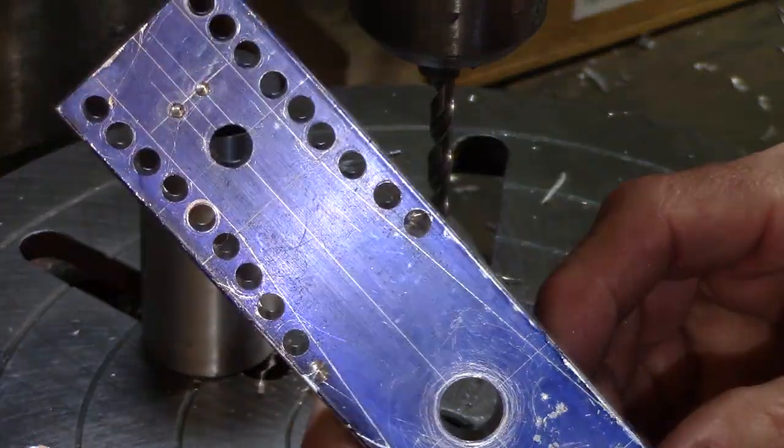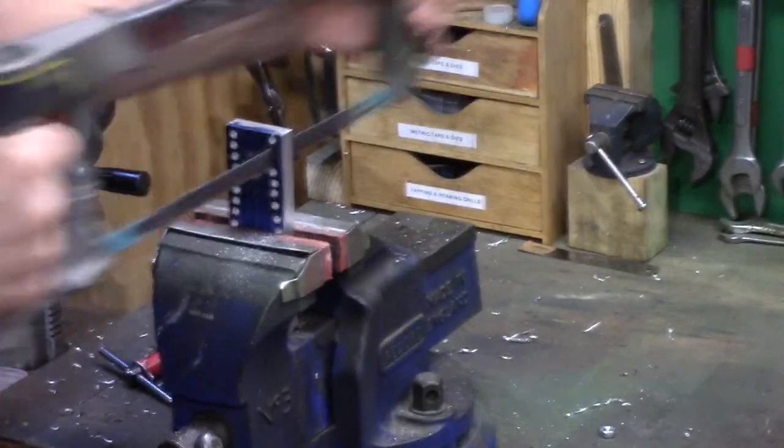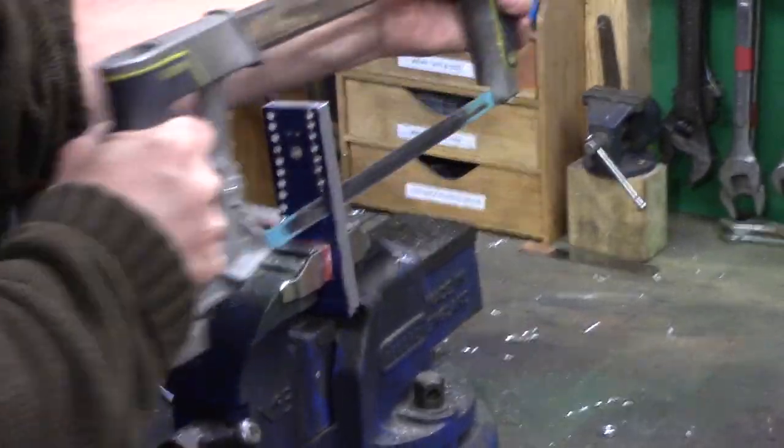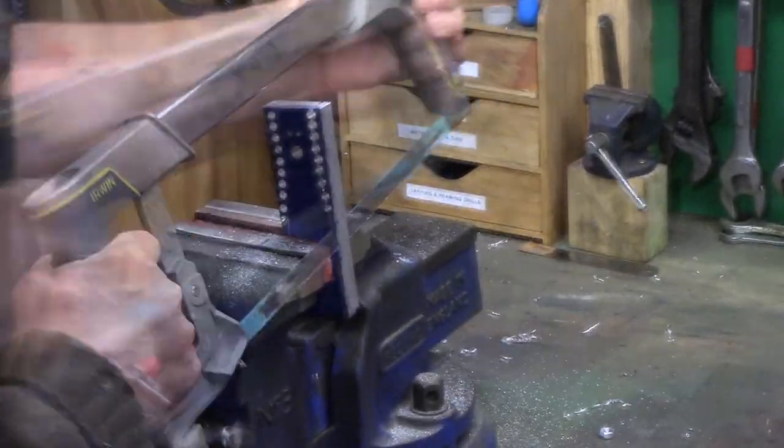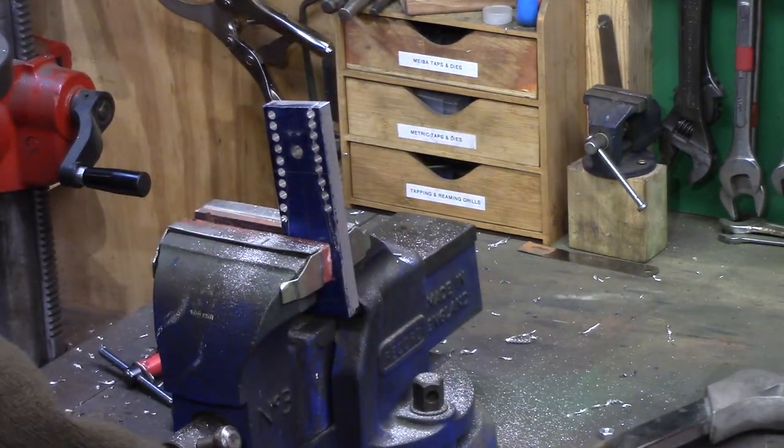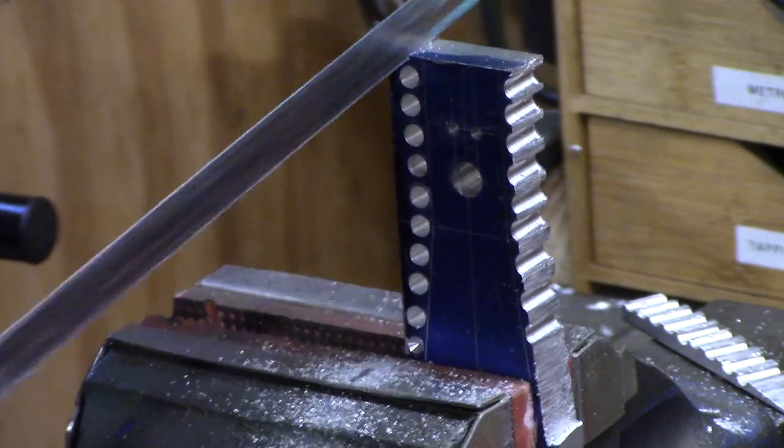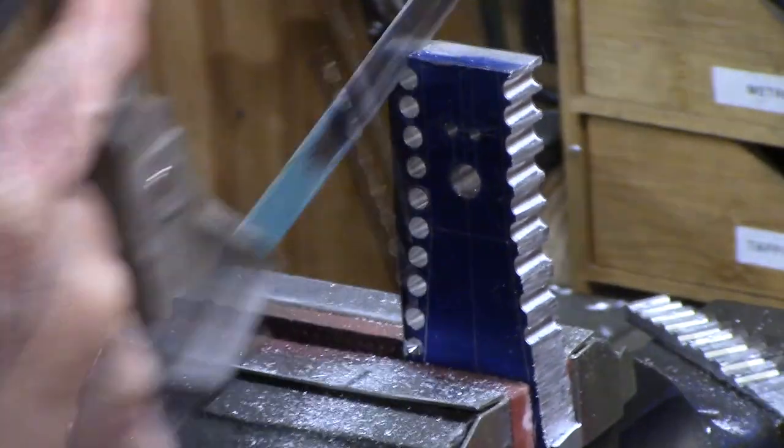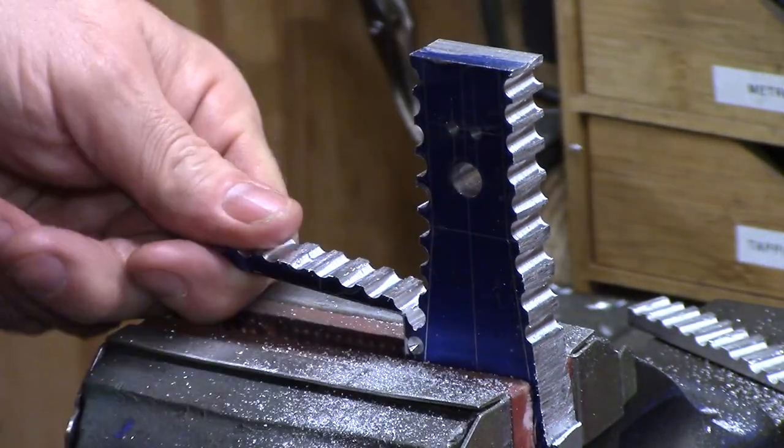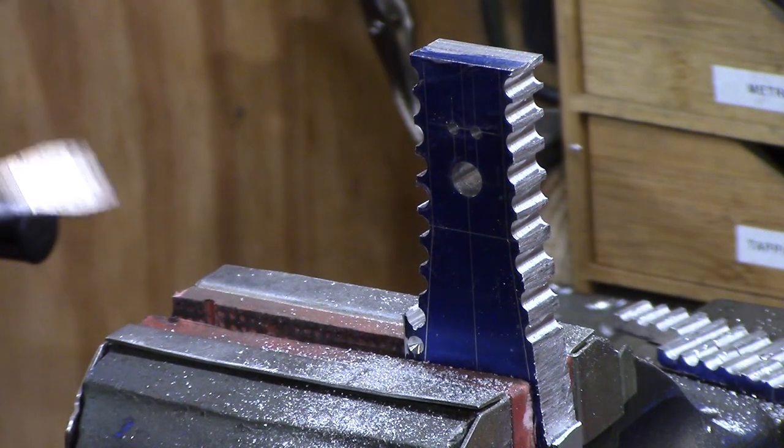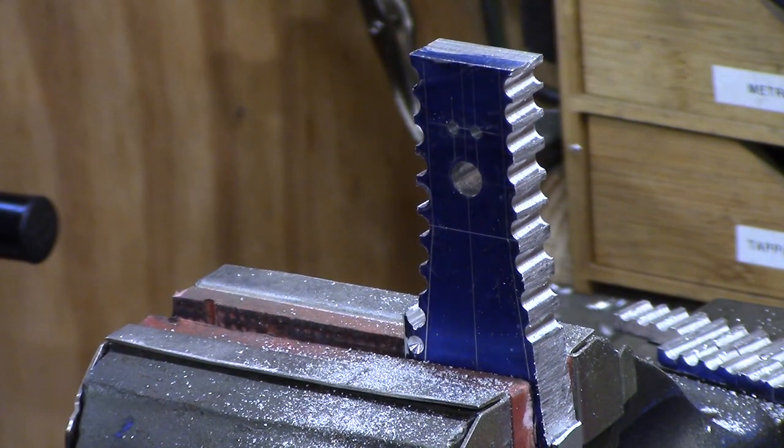This can now be taken to the bench vise where a hacksaw is used to remove the scrap. Alternatively, a bandsaw could be used to make the cuts, as hacksawing can be very hard work. I'm knackered!